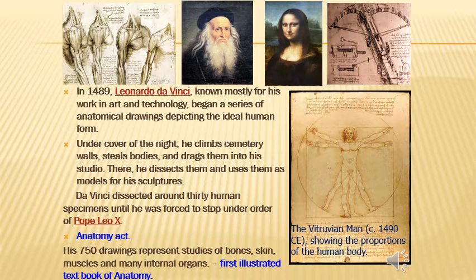Coming to the 14th century, Leonardo da Vinci — mostly known for his work in art and technology — began a series of anatomical drawings depicting an ideal human form. He conducted many dissections, preserved the dissected parts as models, and published about 60 books of literature with pen drawings. He was a well-known painter, sculptor, architect, musician, and anatomist.